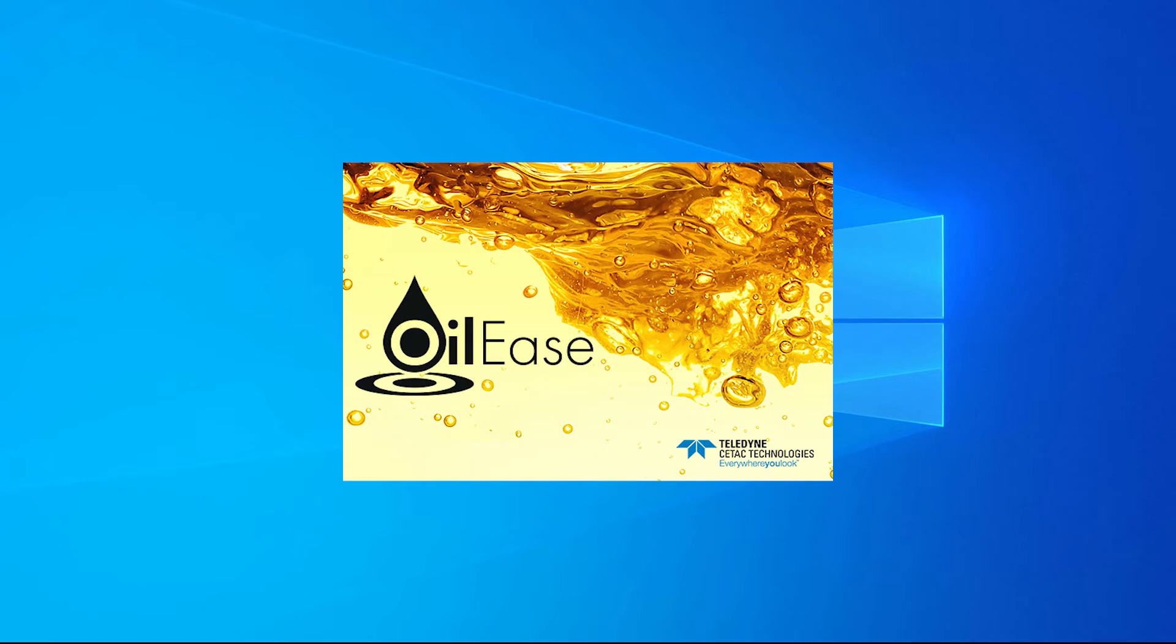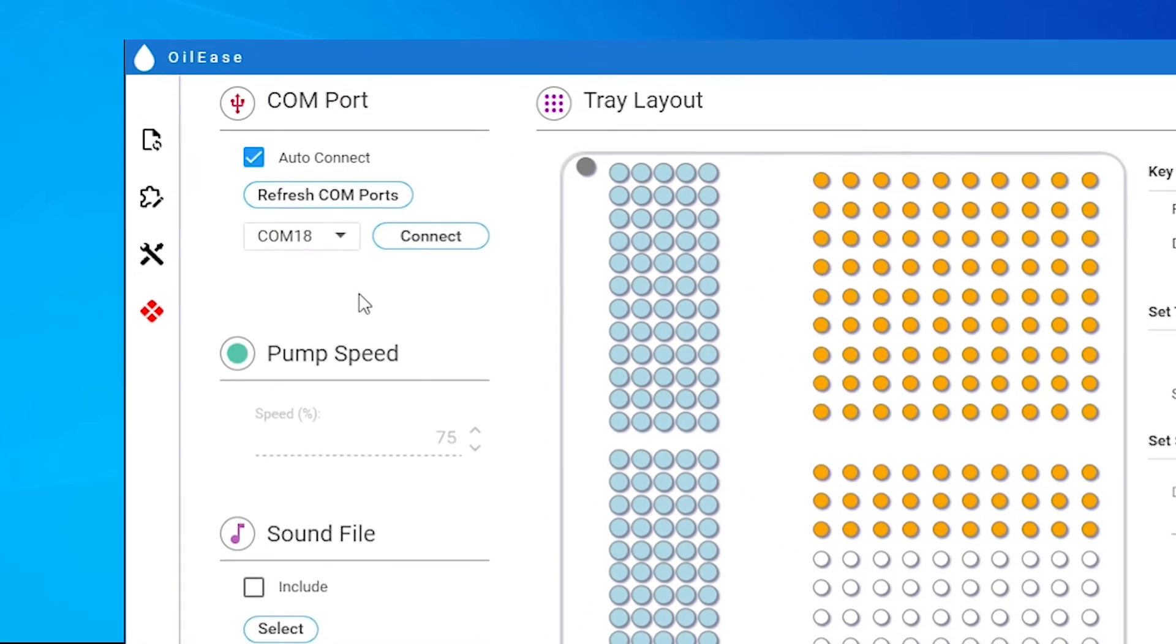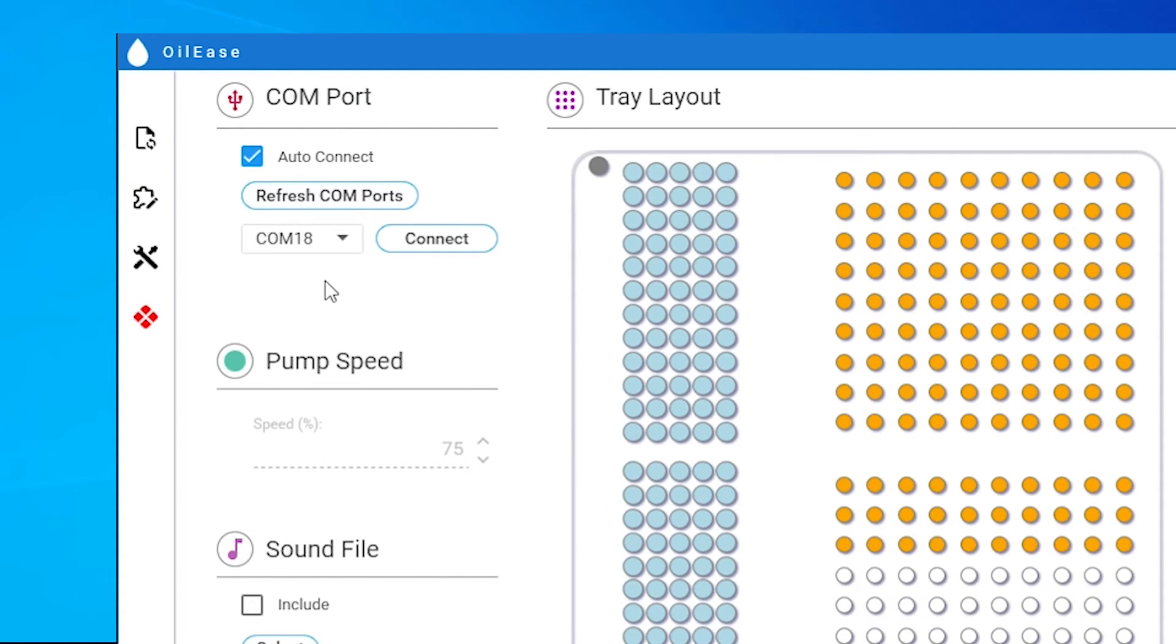Open the OilEase software. On the configuration screen, select the COM port where the autodiluter is connected.